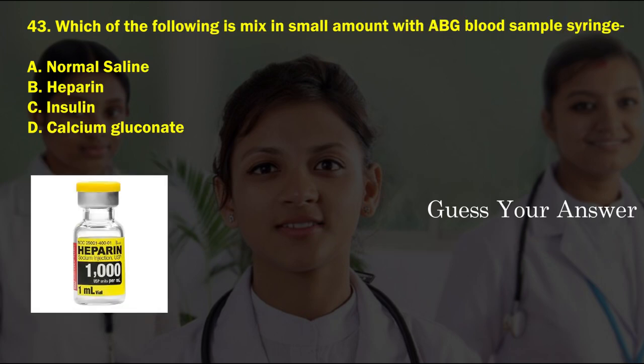Which of the following is mixed in small amount with the ABG blood sample syringe? Option A: normal saline, option B: heparin, option C: insulin, option D: calcium gluconate. The correct answer is option B, heparin.